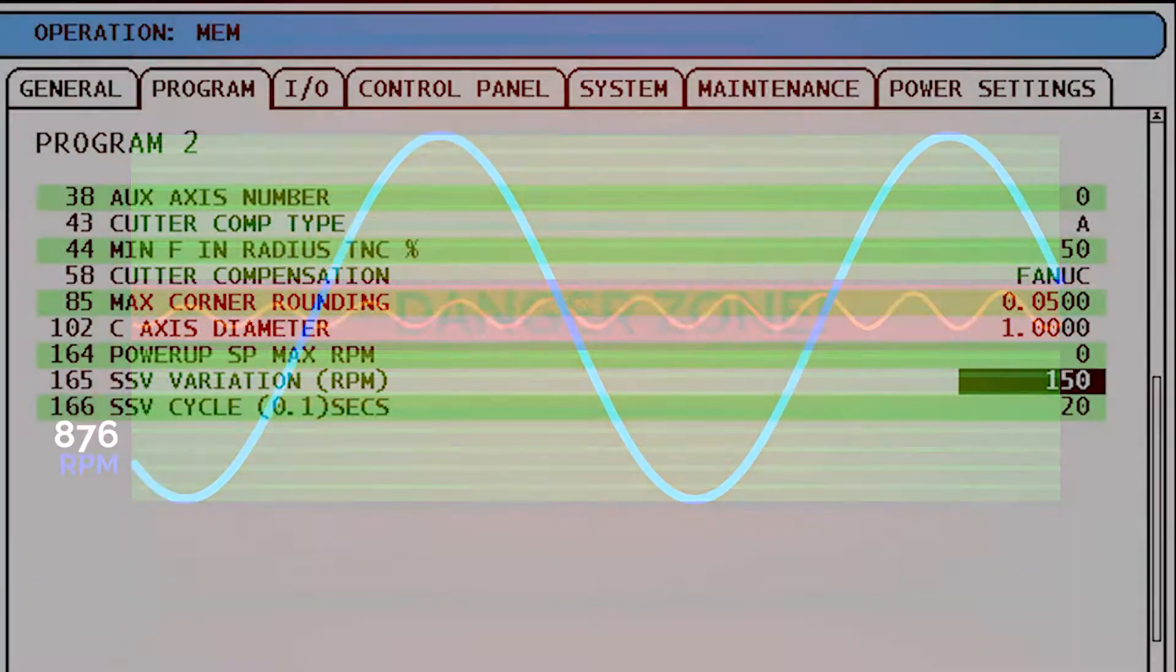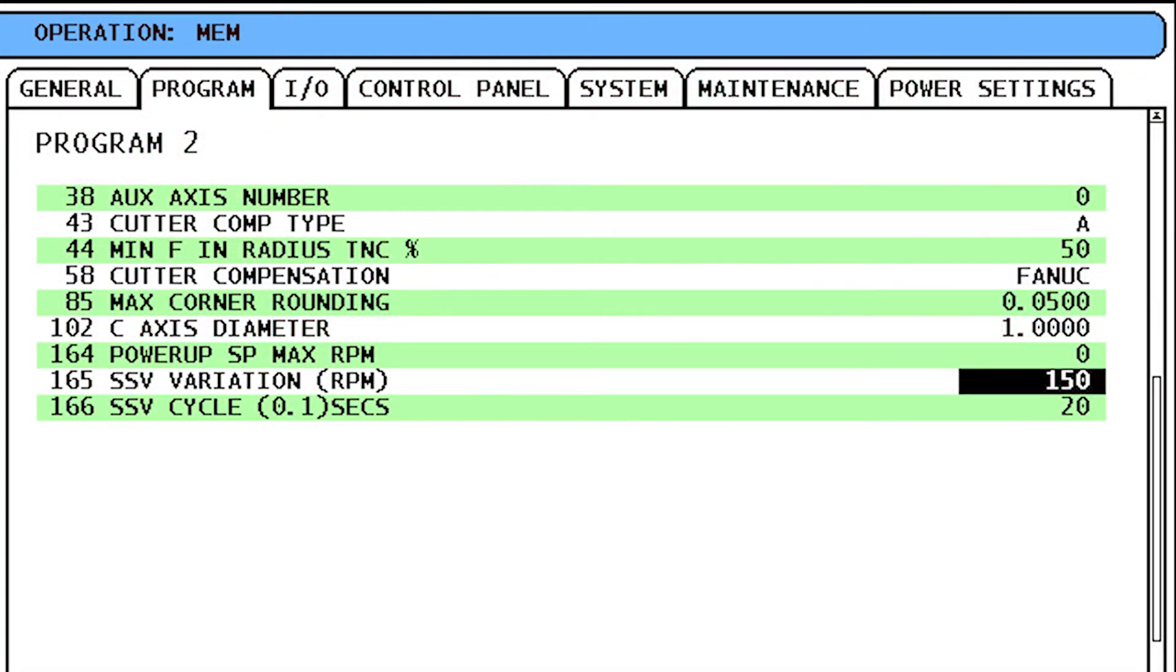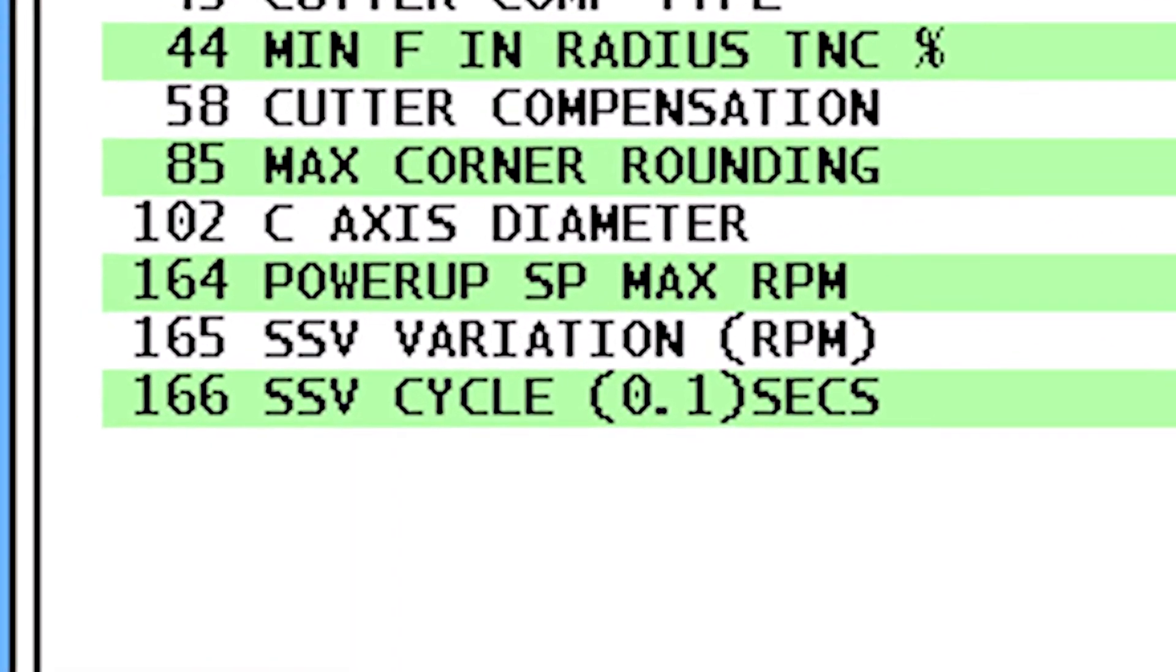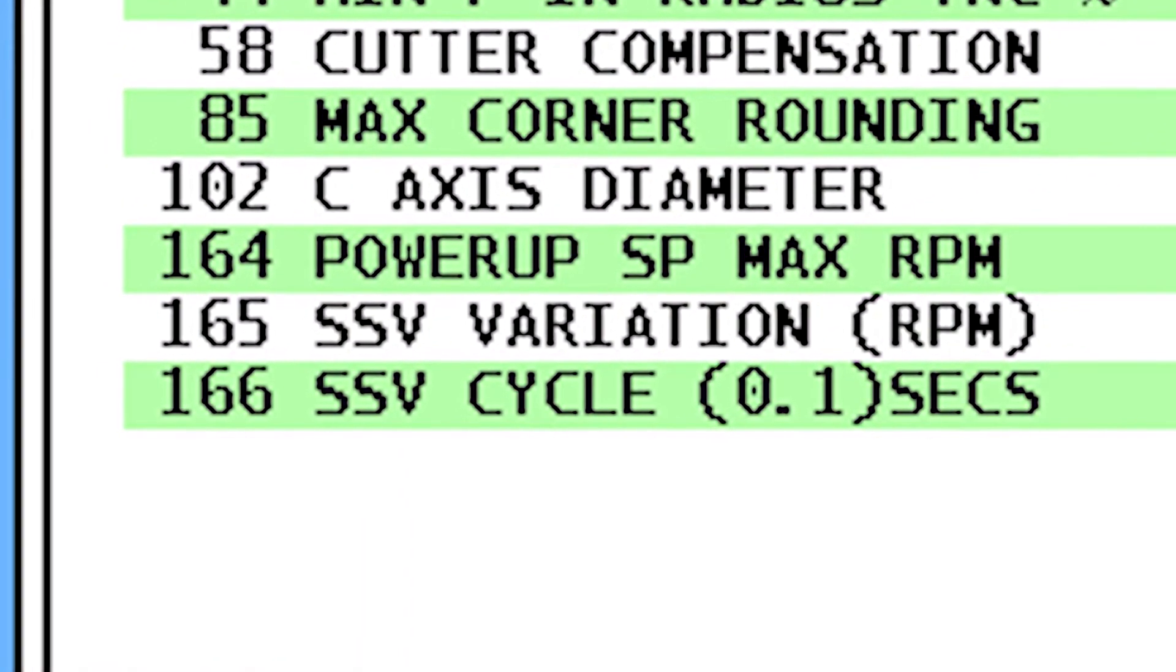So, how do I use this feature? We use setting 165 and setting 166 to drive SSV. In order to understand these settings, let's take a look at this graph.